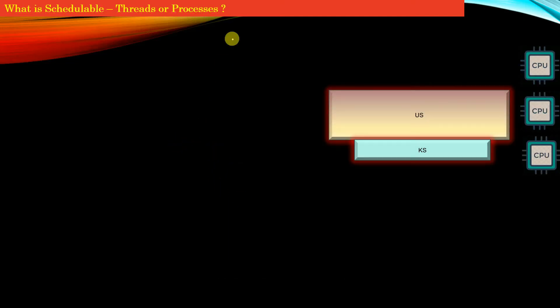Now, if I ask you a question: what is schedulable - is it threads or processes? Your kernel or operating system does not schedule processes; it schedules threads. By schedule, I mean how the operating system decides which thread to allocate which CPU for execution.